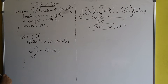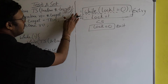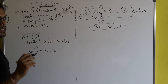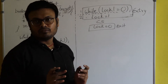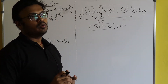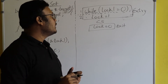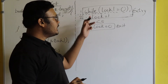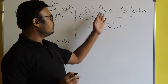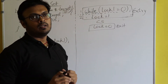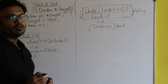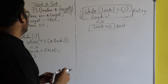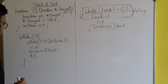The problem that was there in the entry section of the lock variable — in test-and-set, the entry code is written so that those two lines of the entry section have become atomic. It means those two lines have been converted into a single atomic line in test-and-set, so that we can achieve mutual exclusion.